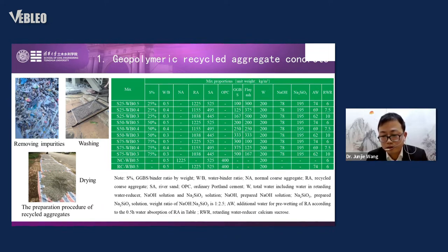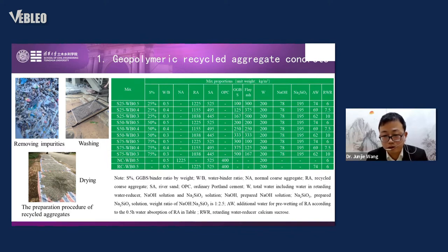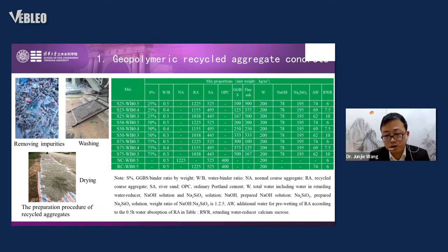We consider different ingredient ratios of the geopolymer, meaning different ratios of GGBS and fly ash. S25 means GGBS is 25% and fly ash is 75%, ranging from 25% to 75% GGBS. We also compare with normal concrete (NC) and normal recycled concrete (RC).